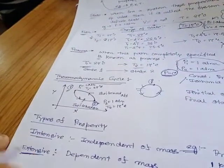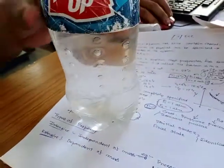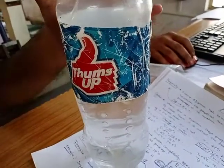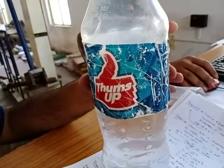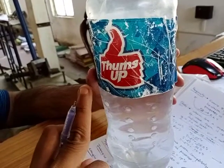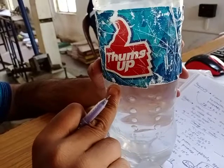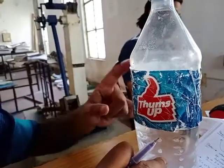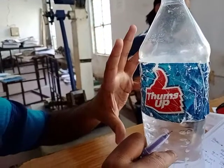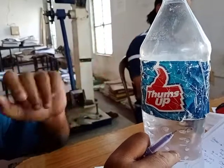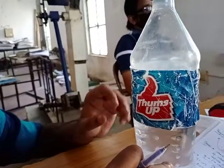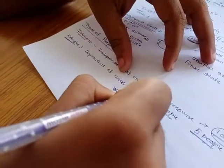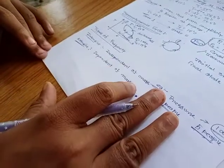Extensive properties are those which are dependent on mass. For example, take this water bottle. It has some volume. If it is not fully filled, it has lesser mass and lesser volume. But if we fill it with water, the mass increases as well as the volume. So the volume of the water inside the bottle is dependent solely on mass, and therefore volume is an extensive property. With this, I am ending this first lecture. Thank you.